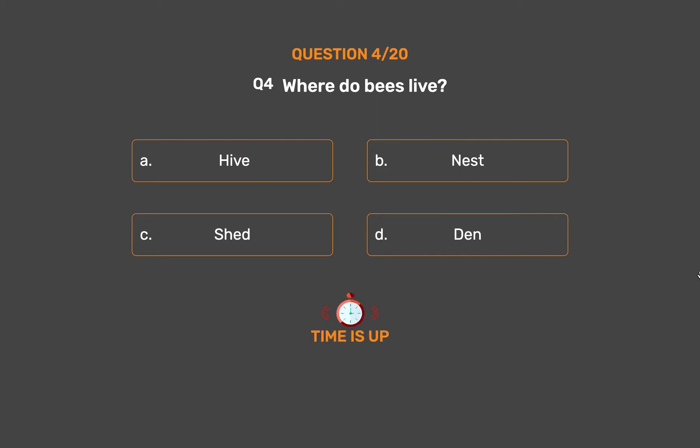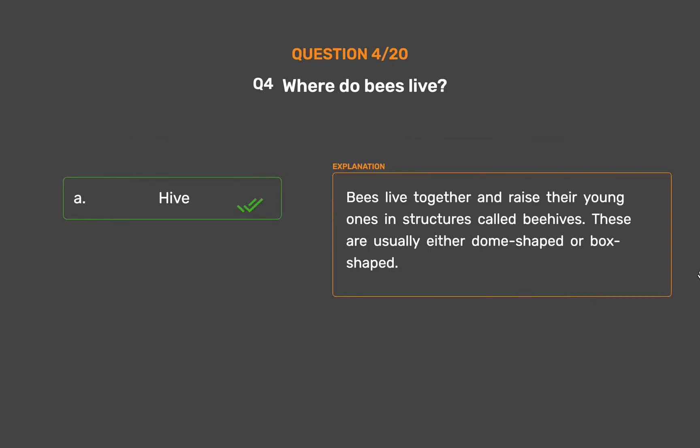The correct answer is Option A, Hive. Bees live together and raise their young ones in structures called beehives. These are usually either dome-shaped or box-shaped.